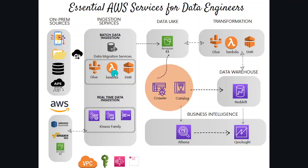Lambda is a serverless computing service that allows data engineers to run code without managing or provisioning infrastructure. It is often used to build serverless ETL pipelines or data processing tasks triggered by events from other services. Glue is a fully managed ETL service that automates the process of preparing and transforming data and also offers a data cataloging feature. EMR is a managed big data processing service that allows data engineers to run distributed frameworks like Spark or Hadoop on scalable clusters.